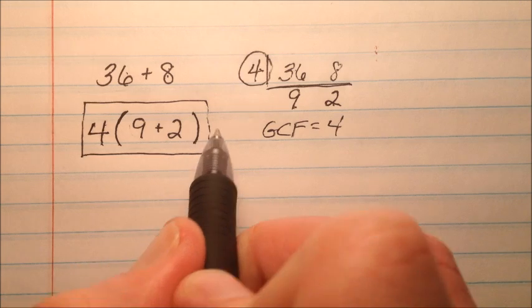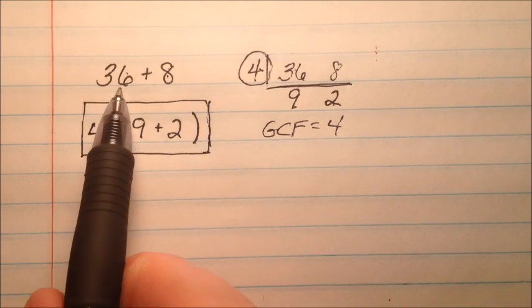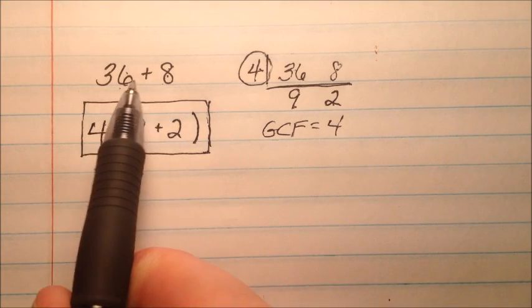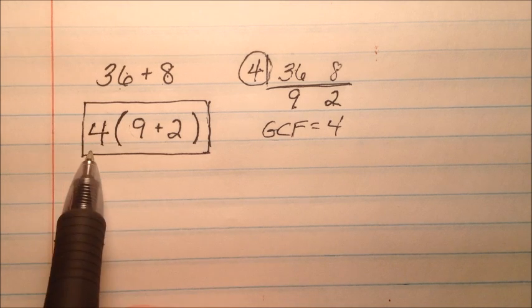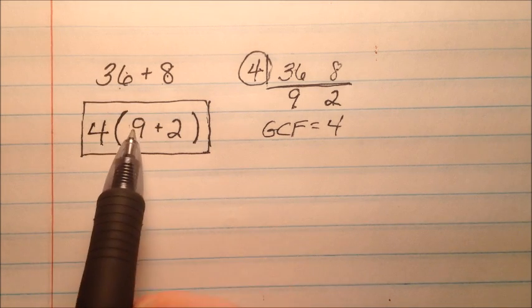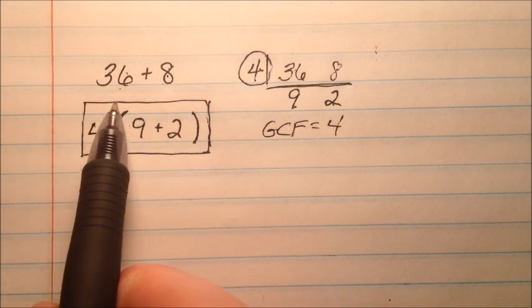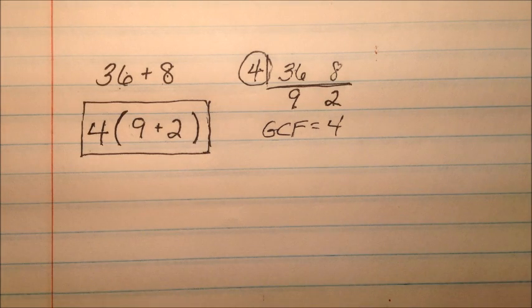So we're going to rewrite these addition problems by finding the greatest common factor of the two addends. We're going to pull it out front and then we're going to divide it out of each one of these terms. So again, backwards distributive property, this is the first look at factoring which is going to come back and be a big part of algebra.